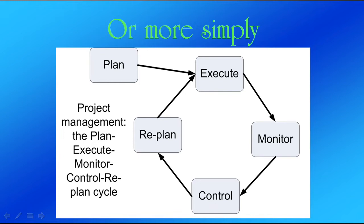In this diagram, the plan is you creating the game to the point where you have a playable prototype. Execute is playing that prototype — first solo, and then later with other people. While the game is being played, you monitor whether it's doing what it's supposed to do, whether it's going according to plan. Control is when you see that something isn't going to plan — what are you going to do about it? How are you going to fix it and make it work the way you want?